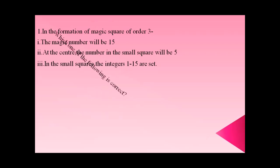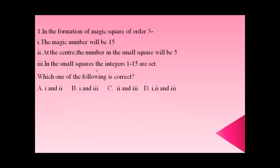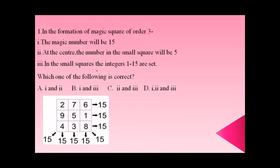We need to check which option — A, B, C, or D — is correct. In a 3×3 magic square, we place the numbers 1 through 9, one in each of the nine small squares. The magic number is what you get when you add any row, column, or diagonal.